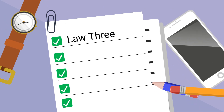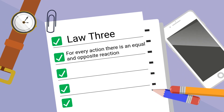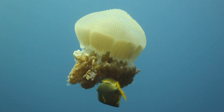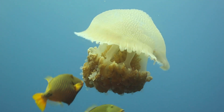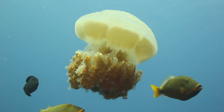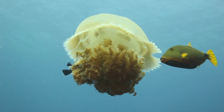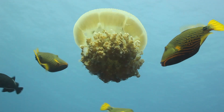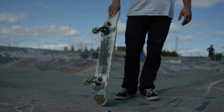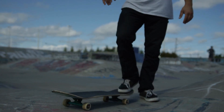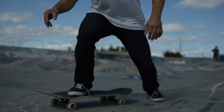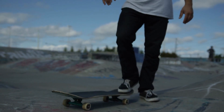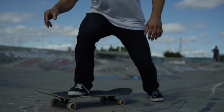And finally, law three states that for every action there is an equal and opposite reaction. Look closely at this jellyfish swimming. As the jellyfish moves its body backward, it actually moves forward because the water exerts a force in the opposite direction. Same with the skateboard — the foot is pushing the skateboard backwards, but the skateboard goes forward because the foot and the pavement exert a force in the opposite direction.